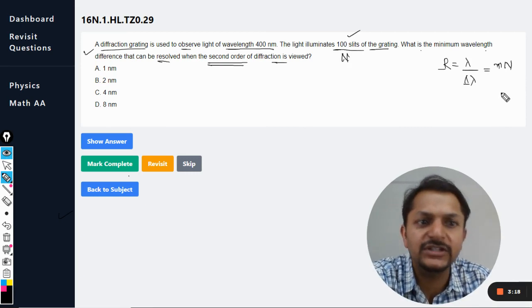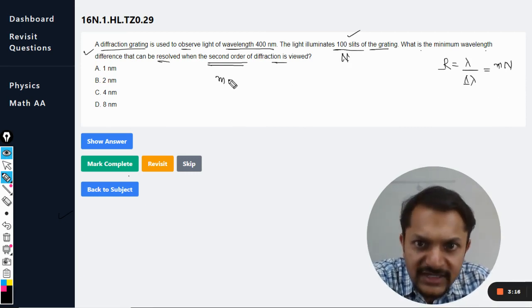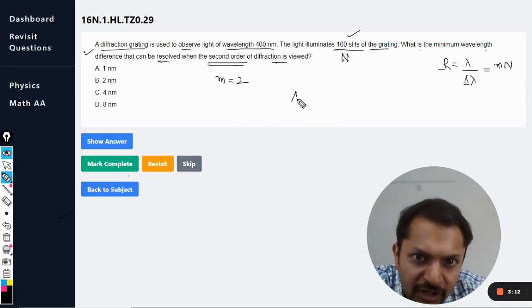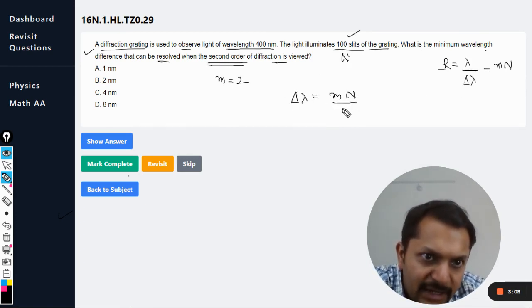And we will substitute here. M is given as 2, and delta lambda is what we want to find. So according to this formula, delta lambda is MN divided by lambda. So M is 2, capital N is 100, and lambda is 400.